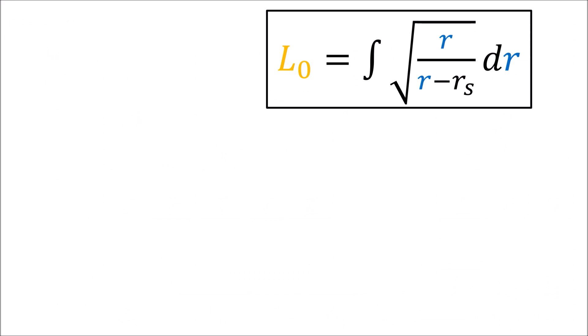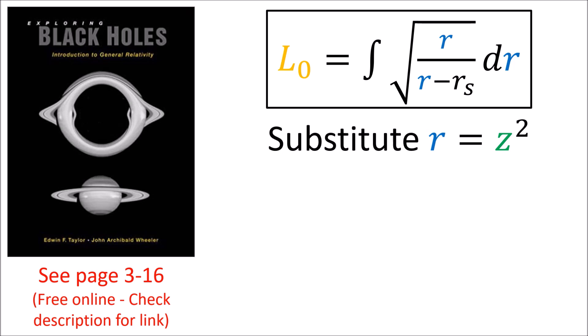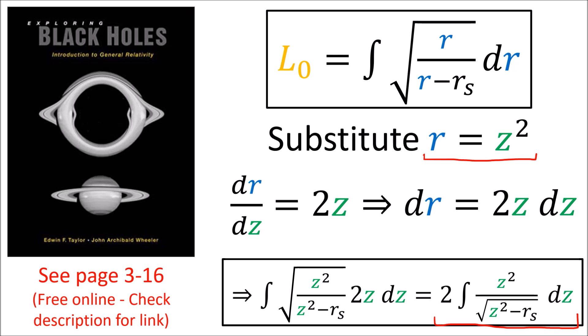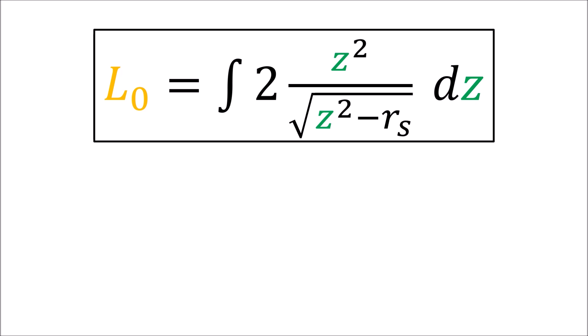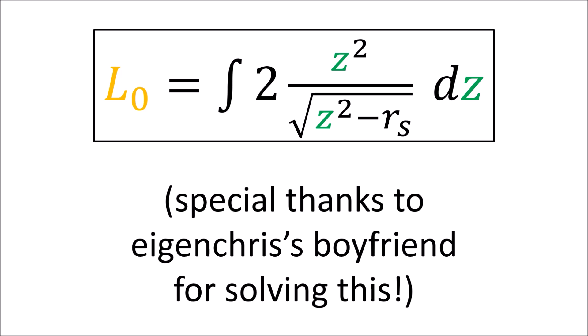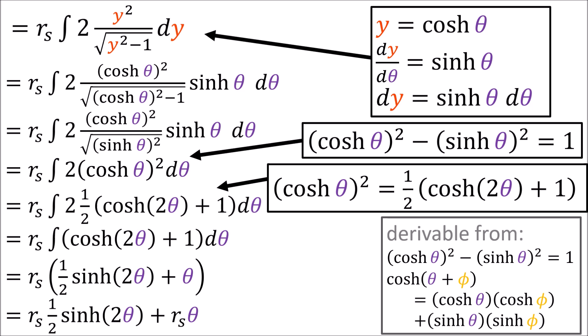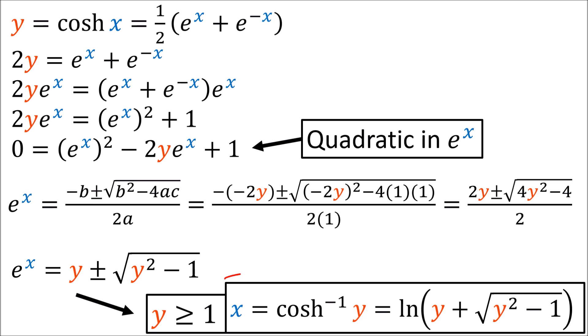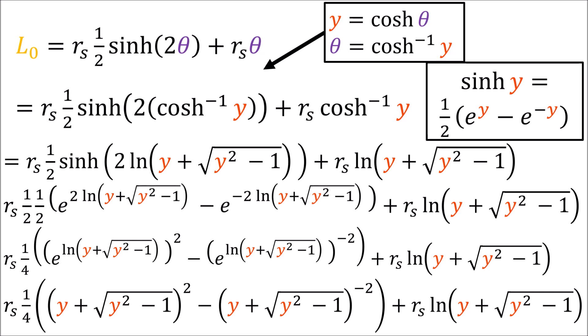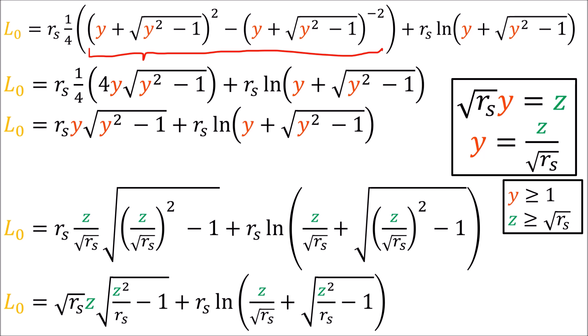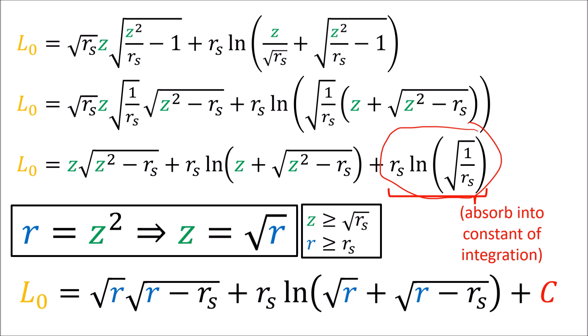We can see this concretely by computing the integral. According to the free online textbook Exploring Black Holes, we compute this by performing the substitution R equals Z squared. Using a hyperbolic cosine trig substitution and an identity to convert inverse hyperbolic cosine to a natural logarithm, after some algebra we end up with a formula for proper length to be evaluated at two R positions. Note that this formula is only valid in the spacetime region outside the Schwarzschild radius.